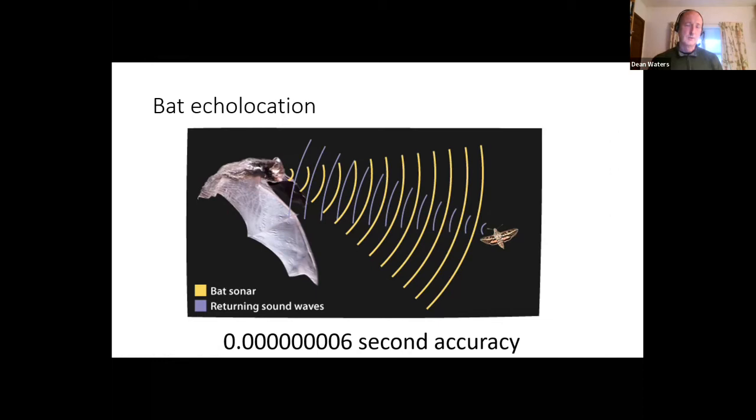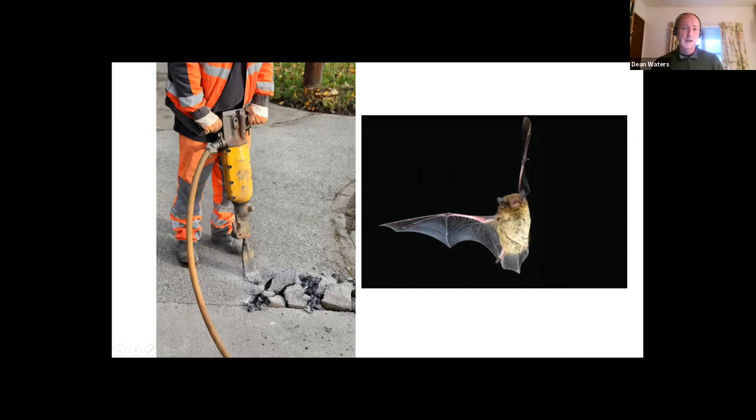What they do is work out how long it's taken for the sound to go out and back, divide that by two, and that will get you the distance because they know what the speed of sound is. Obviously they don't work it out in terms of calculator format—it's all done using neural networks—but the take-home message is it's accurate in terms of timing to about six nanoseconds. That's incredibly accurate, almost more accurate than we're able to measure in terms of engineering. It's a very sophisticated system and bats process that sound very quickly as well.